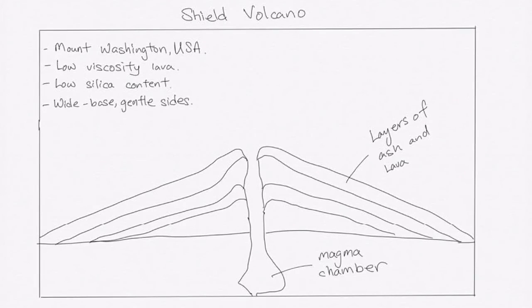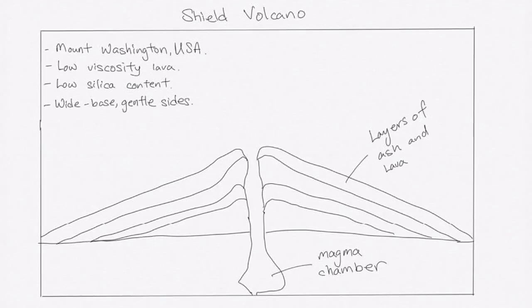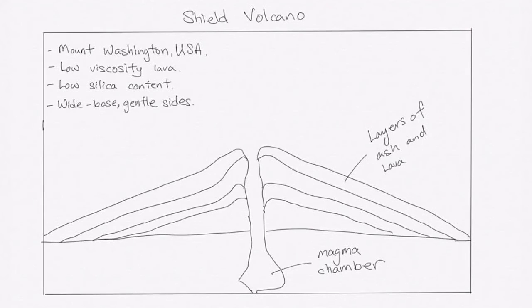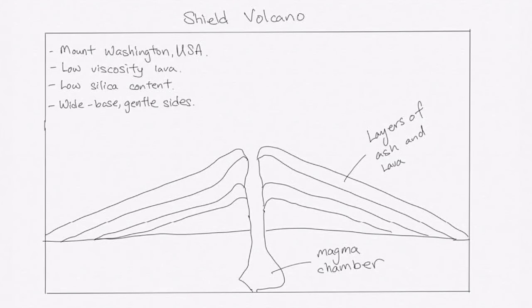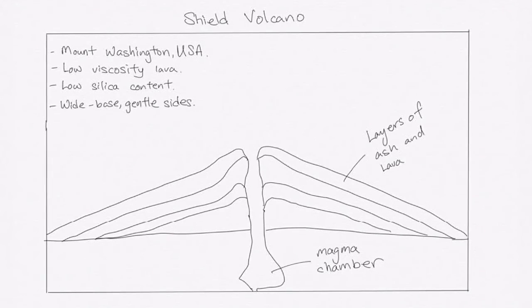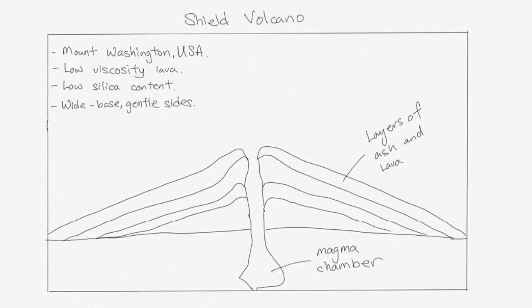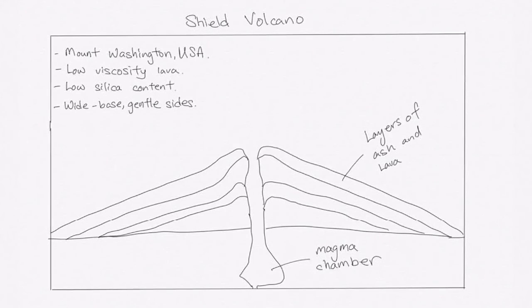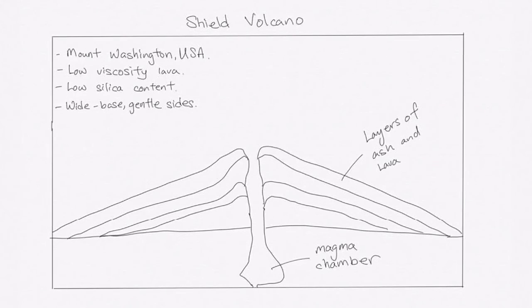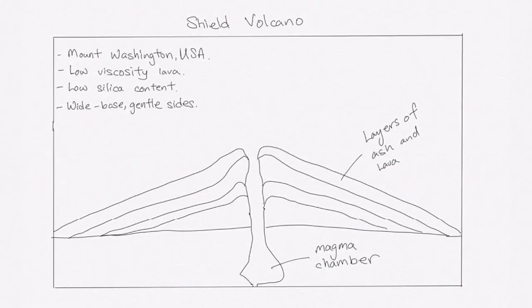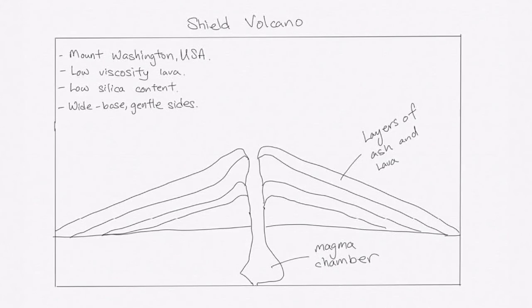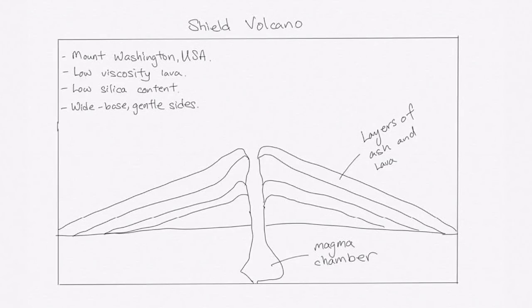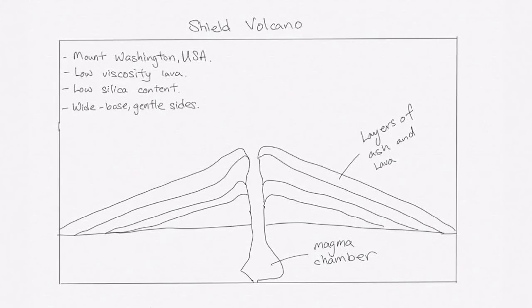The last set of landforms that we will be looking at are your volcanoes. Within your syllabus, there are two types of volcanoes that you will need to identify as well as potentially sketch. The first one we are looking at here is a shield volcano. An example that was given is Mount Washington in America. Key factors that lead to the formation of shield volcanoes include low viscosity lava, low silica content, wide base gentle sloping sides, the sides that are made of layers of ash and lava. Within the diagram itself is a very simple diagram. Key point being the magma chamber being highlighted. There are also times where you can choose to highlight where the central vent is, where the crater is.